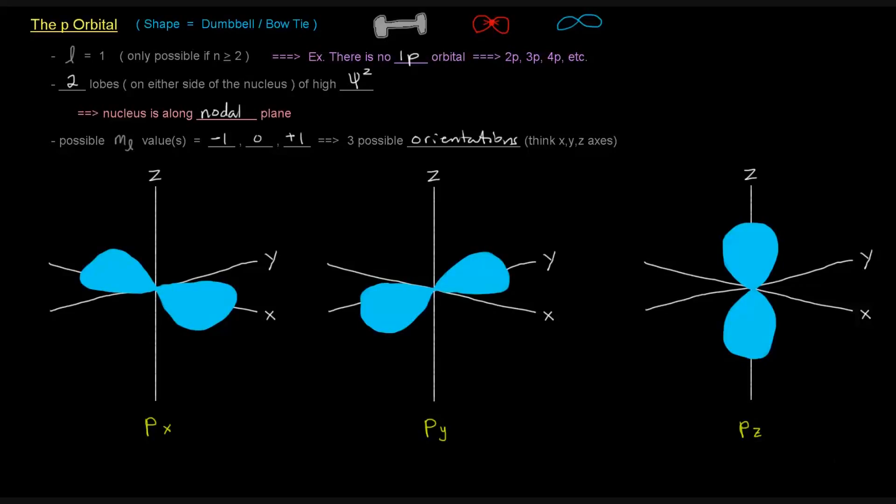These aren't perfect representations here, but the idea is that there's two regions of high probability on either side of the nucleus. The electron can be in either of these lobes.